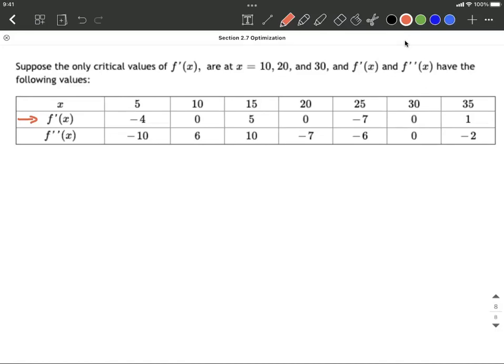So at x=5, because our first derivative is negative, we know our function is decreasing. When it's equal to 0, we get a horizontal tangent line to the graph. Then increasing, because we have a positive 5, then another horizontal tangent line.